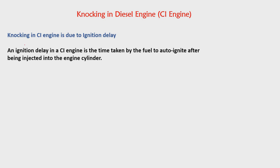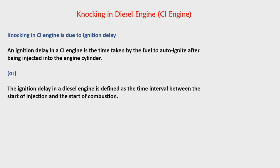Ignition delay means the time taken by the fuel to auto-ignite after being injected into the engine cylinder. It can also be defined as the time interval between the start of injection and the start of combustion. For example, after the fuel is injected as fine particles, it should immediately convert to vapour and undergo combustion. The time taken for this conversion is called ignition delay.